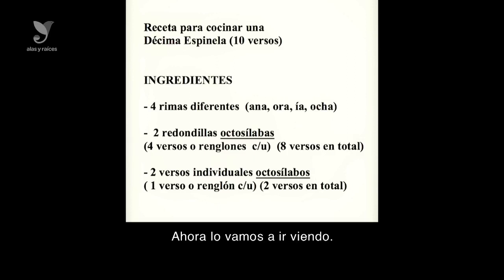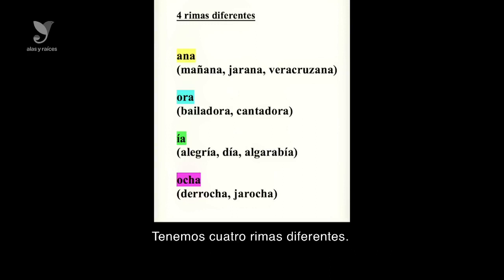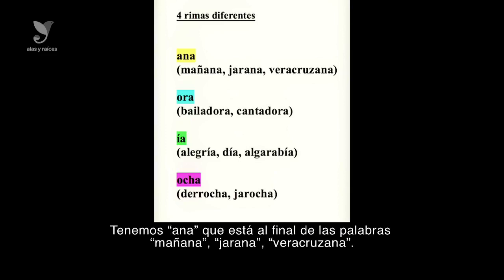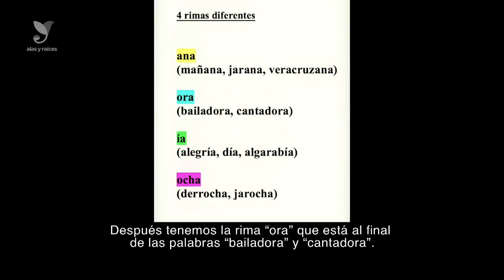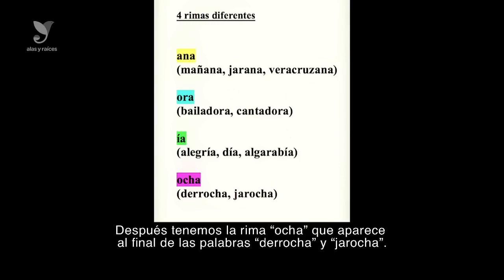Aquí están desglosados los ingredientes para hacer nuestra décima Espinela. Tenemos cuatro rimas diferentes. La primera, destacada en color amarillo: la rima ana, que está al final de las palabras mañana, jarana, veracruzana. Después la rima ora, al final de bailadora y cantadora. Tenemos también la rima ia, al final de alegría, día, algarabía. Y la rima ocha, que aparece al final de las palabras derrocha y jarocha.